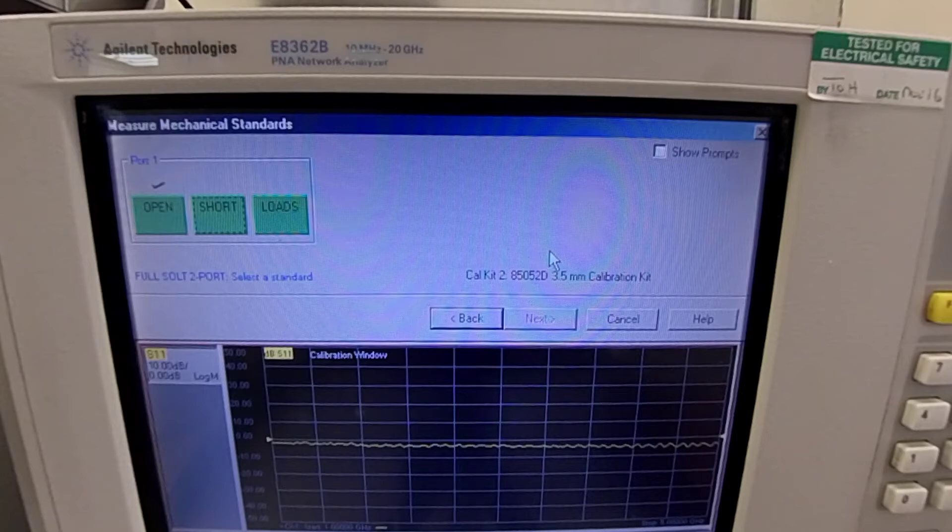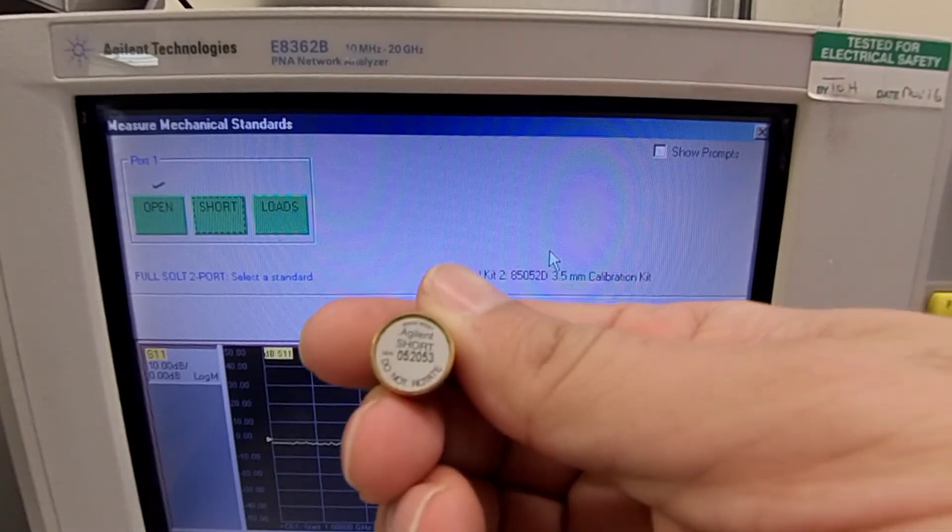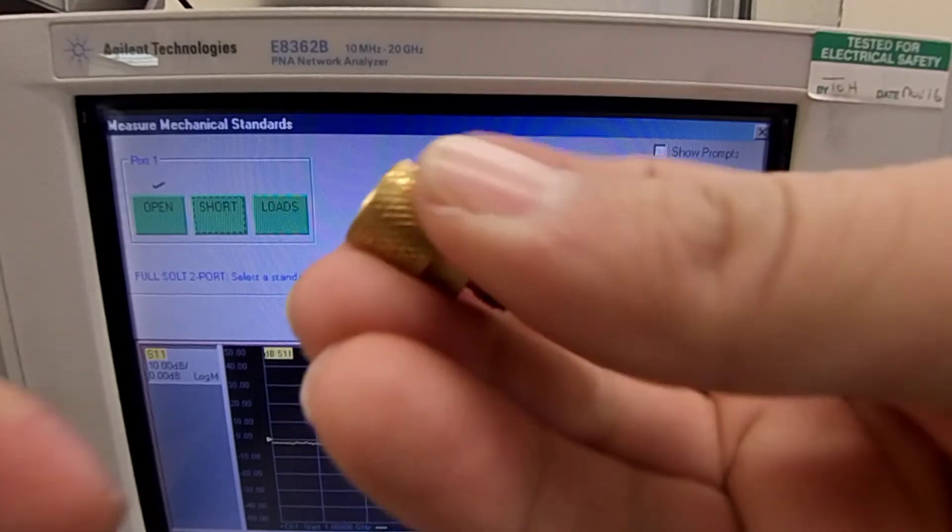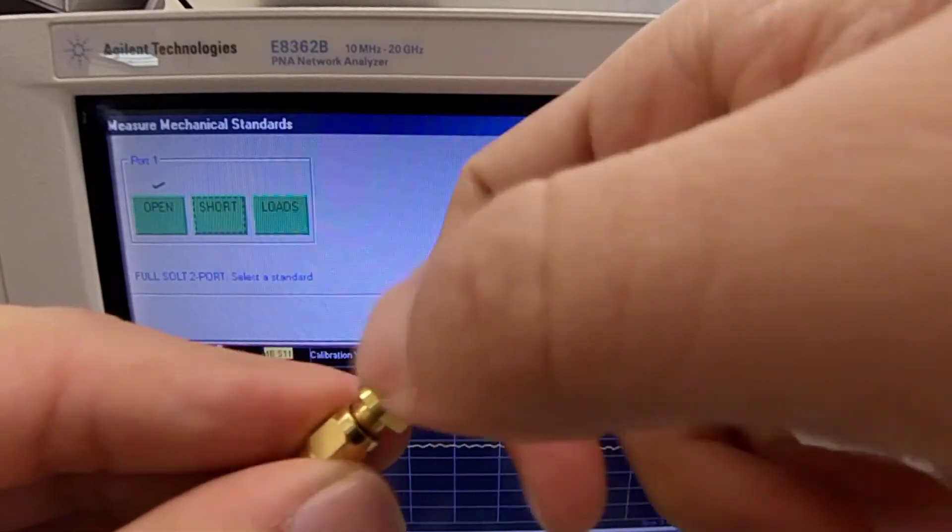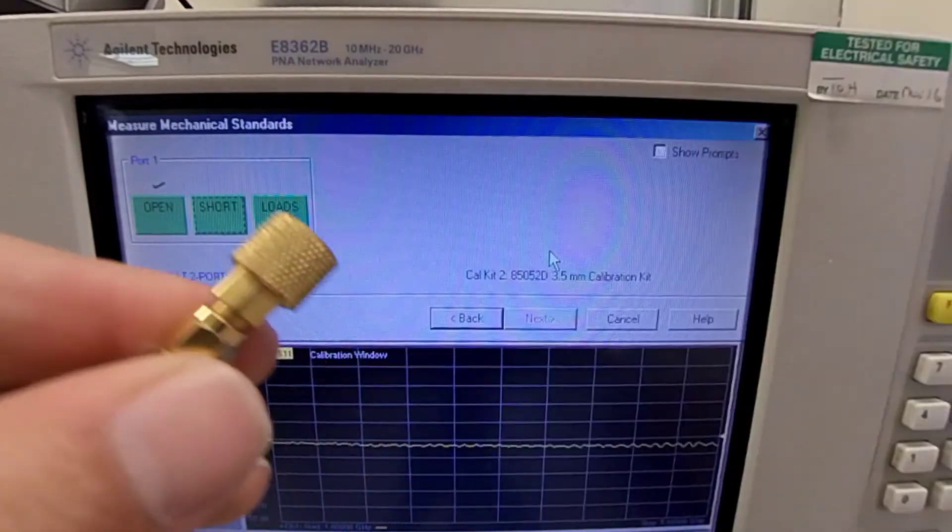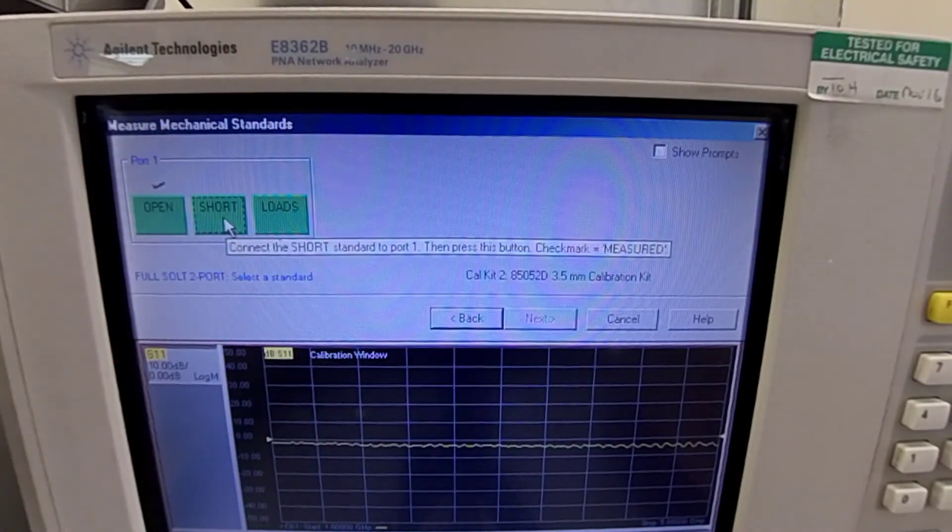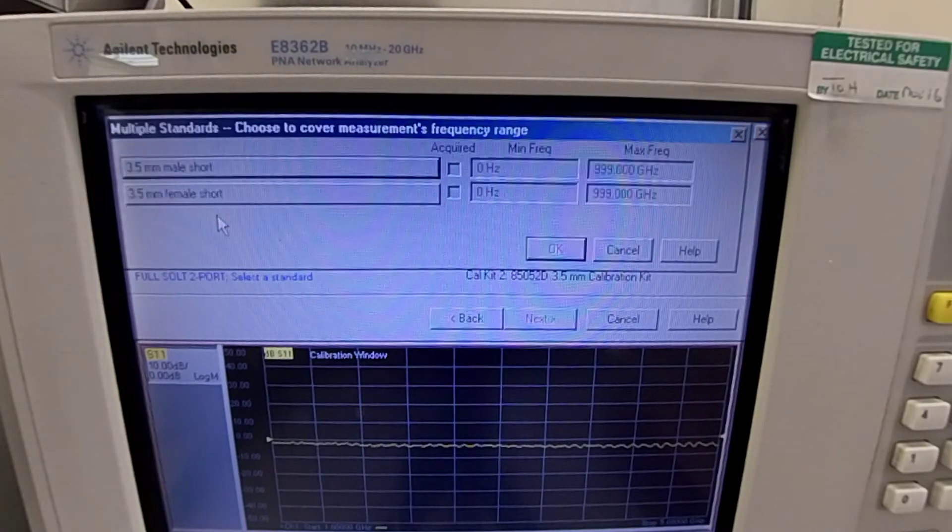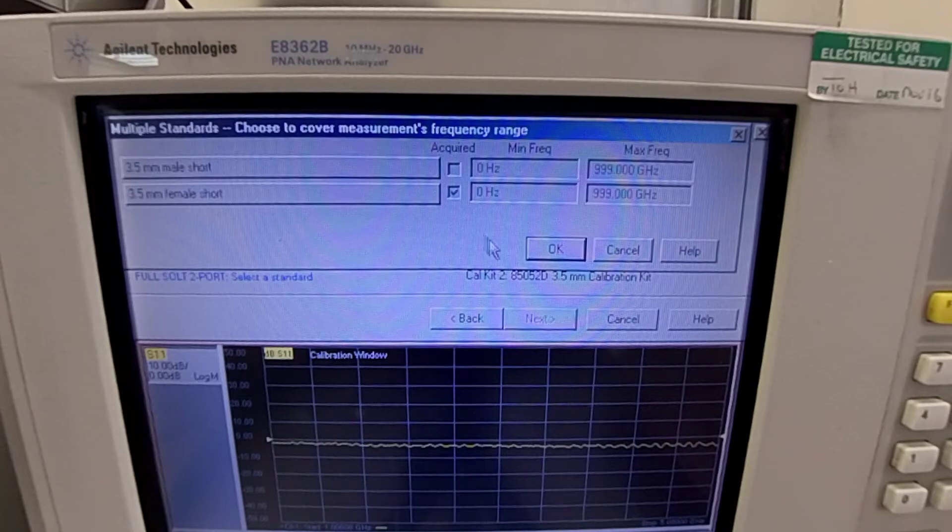Now we need to select a short. As you can see, short. We will connect it to the connector. And select short, female short. Press OK.